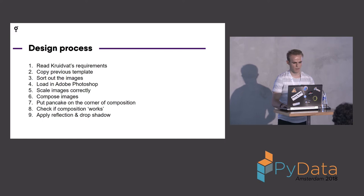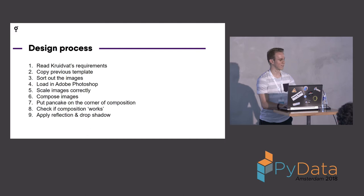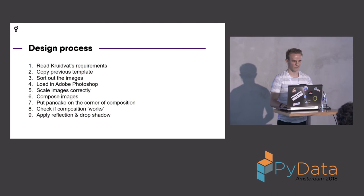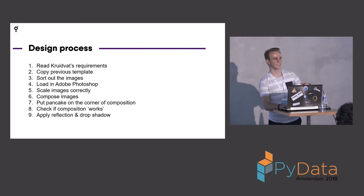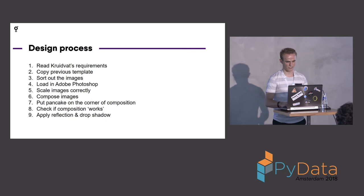So a lipstick should be smaller than a mascara, for example. Then they compose them — they make a product composition. They put a pancake on the corner of the composition, for example '2 plus 1 for free'. Then they see if it works, check if it feels right, and otherwise they change things around. Then they apply reflection and drop shadow, and send it to Kruidvat. Kruidvat gives their opinion about it and this process goes back and forth.